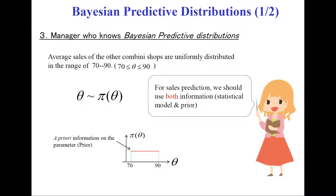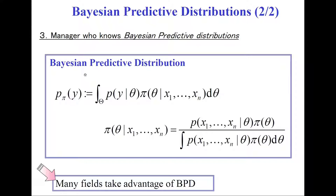Finally, we consider Bayesian predictive distributions. For a manager who knows Bayesian predictive distributions, she will consider prior information. In this case, for example, average sales of other convenience shops are uniformly distributed in the range of 70 to 90. In other words, the parameter theta — average sales — is usually between 70 and 90. So we can model this prior information as a prior on theta, and to make a good prediction, we want to use this prior information.